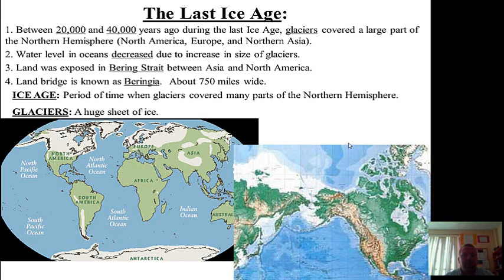It was between 20,000 and 40,000 years ago that the Earth experienced its last Ice Age. During this period of time, glaciers covered a large part of the Northern Hemisphere. If you look at the map on the left, the Northern Hemisphere is the area north of the equator. So during the last Ice Age, glaciers covered a large part of North America, Europe, and Northern Asia.